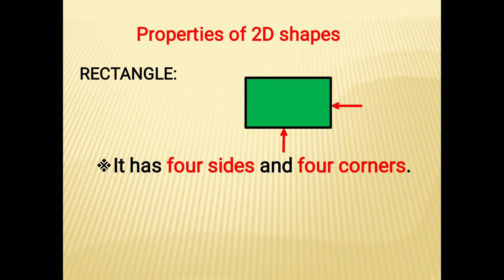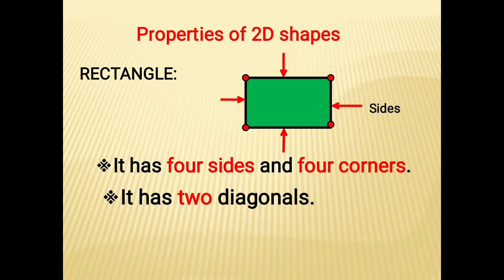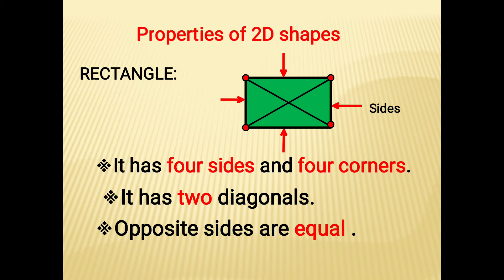The rectangle has four sides and four corners. It also has two diagonals. In a rectangle, opposite sides are equal.